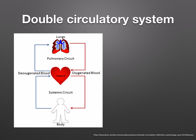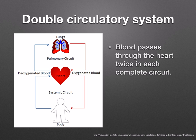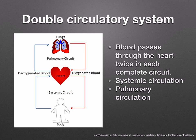As blood flows through the capillaries and the lungs, it loses pressure. Therefore, it needs to be returned to the heart to boost its pressure. So blood passes through the heart twice in each complete circuit. This is called a double circulatory system. Blood goes through the systemic circuit, which is the pathway from the heart to the body and back, and the pulmonary circuit, which is the pathway from the heart to the lungs and back.